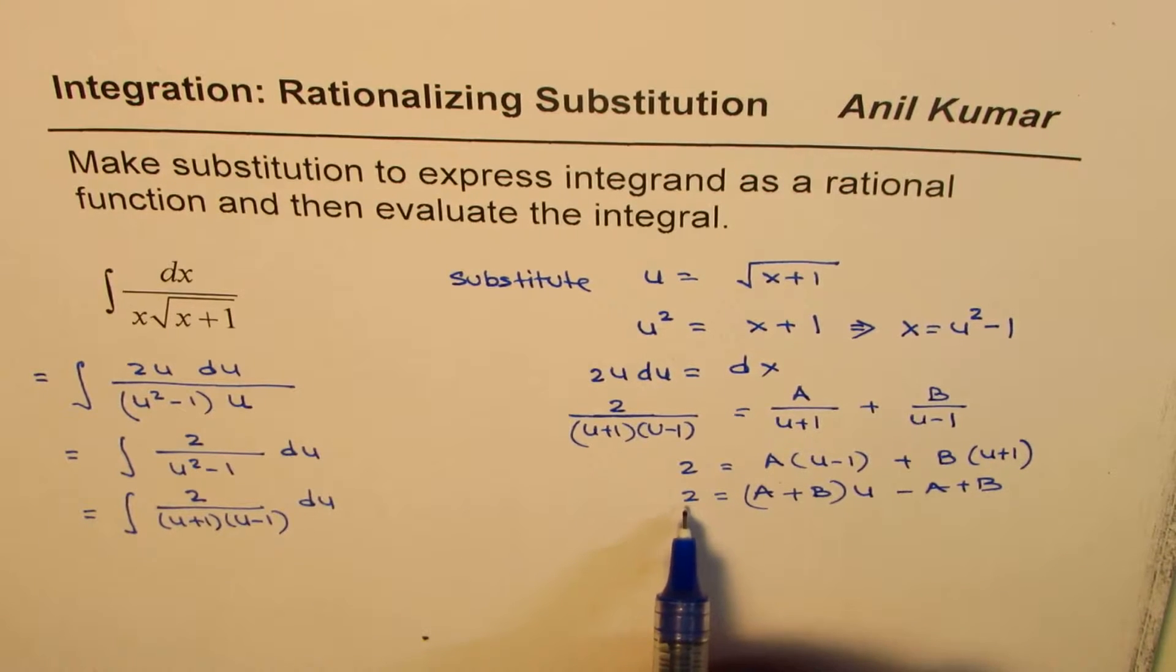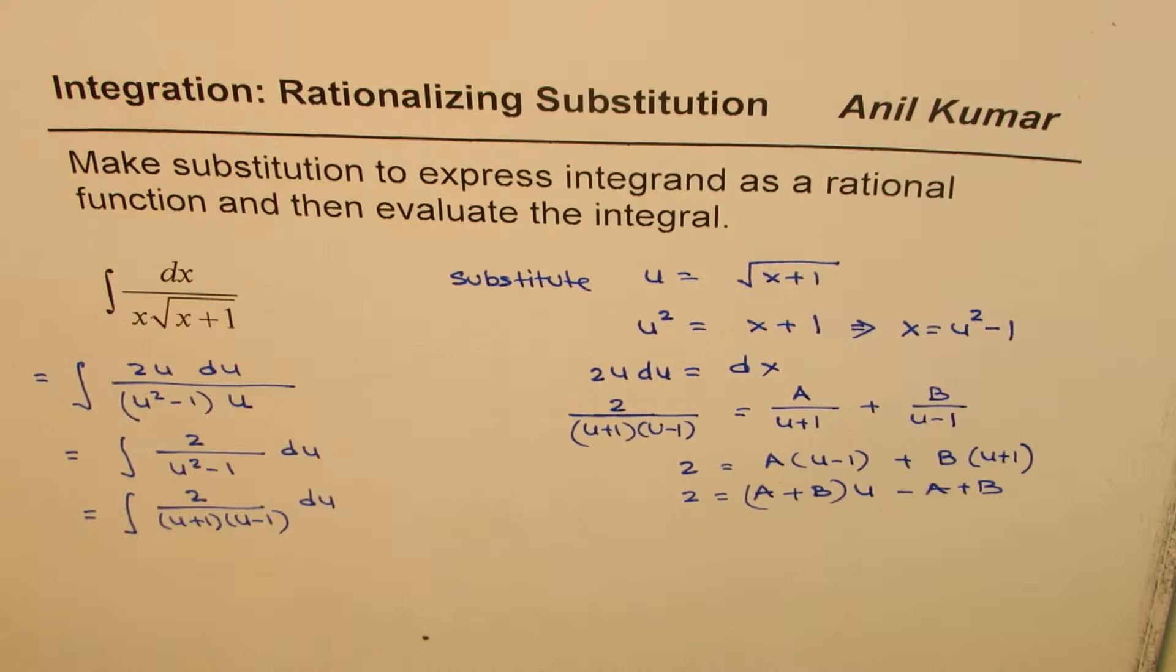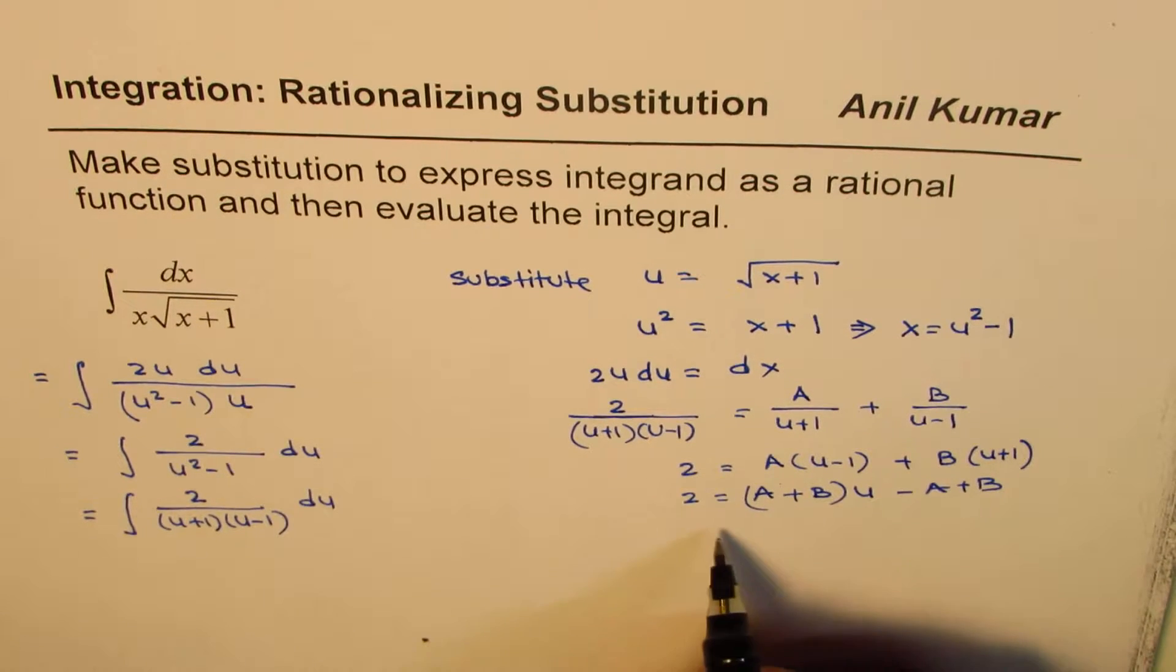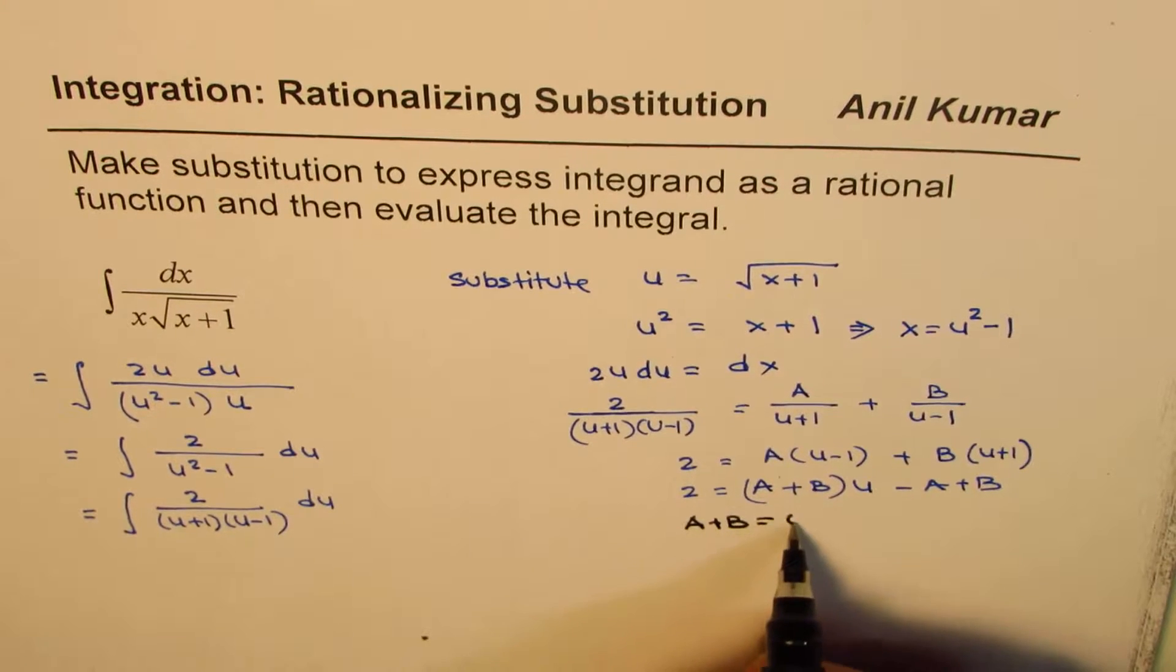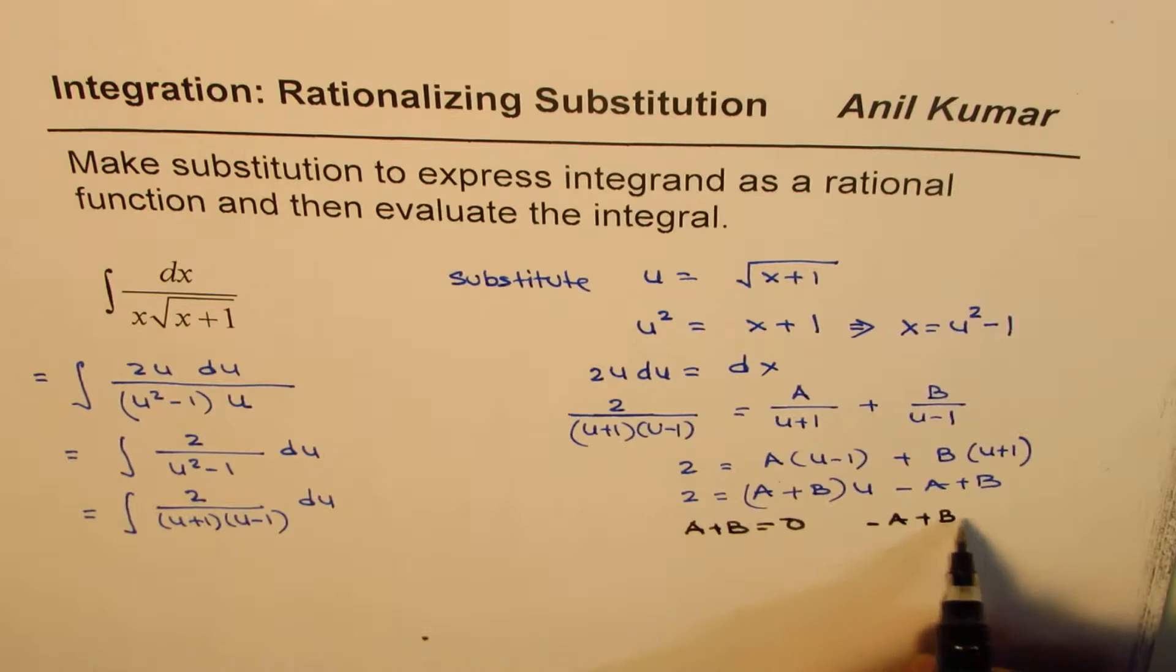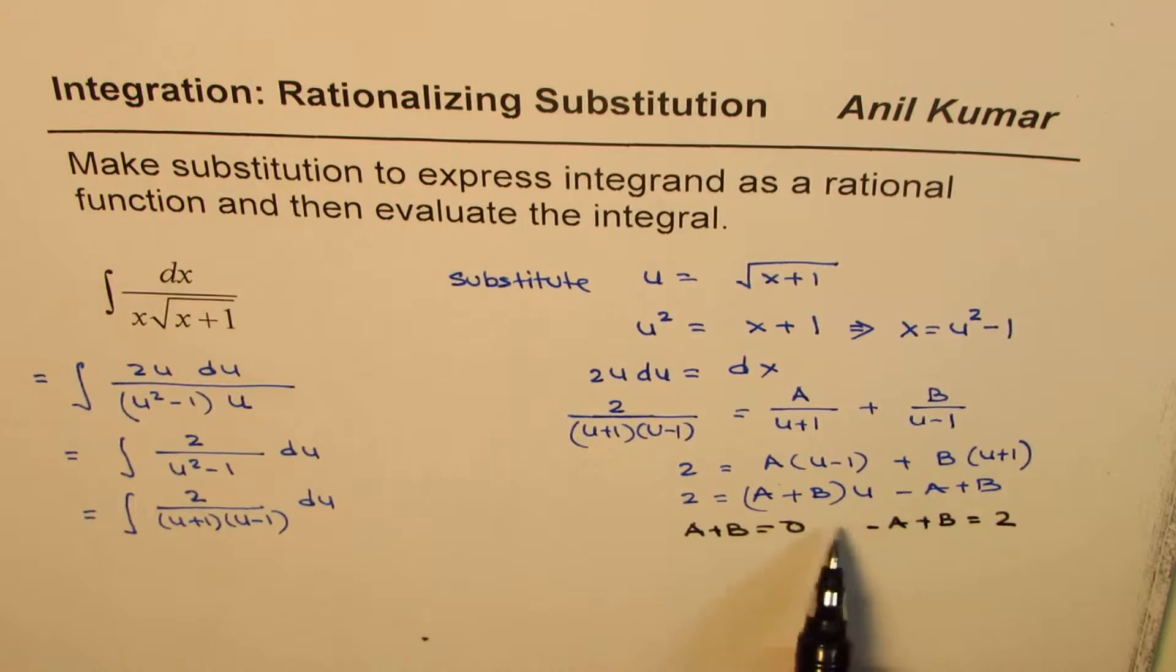Now on the right side we have a plus b u, there's nothing like that here. So we can now make 2 equations from here. So the 2 equations to solve will be a plus b equals to 0 and minus a plus b equals to 2. So these are the 2 equations which we need to solve to get our result.